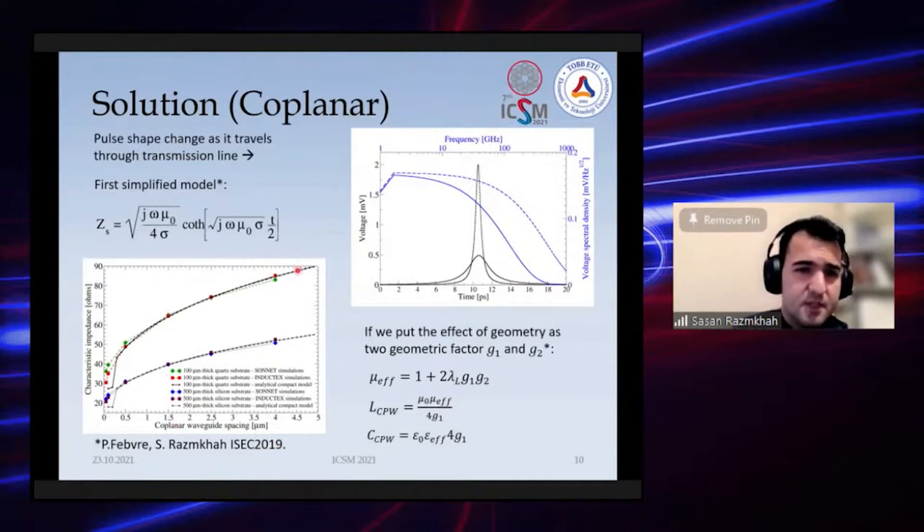These are the results we get from the analytical solution, from calculation with Sonnet simulations and from calculation with InductEx. We see very good match between our calculations and other simulations. This is pulse propagation in a strip line or superconductor line—as you can see the pulse shape changes drastically as it moves along the line, so we need to consider this shape change when designing digital circuits.